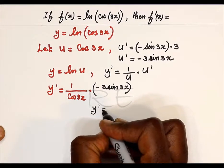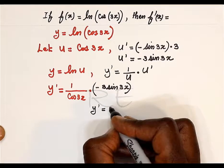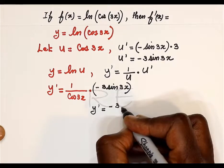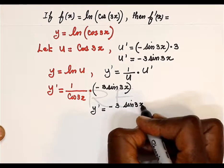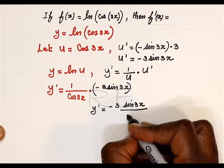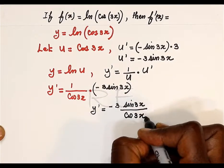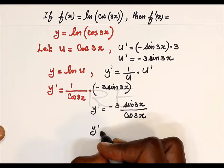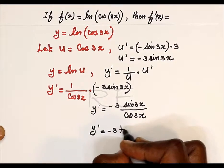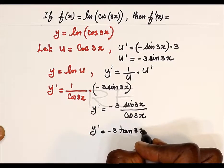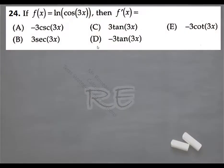Let's bring them together: negative 3 sine 3x divided by cosine 3x. Sine over cosine is tangent, so it's negative 3 tangent 3x.